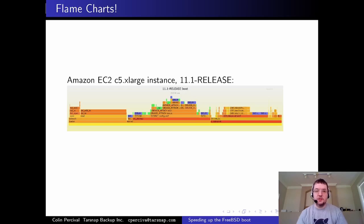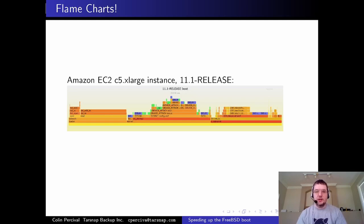This let me generate flame charts of the entire boot process — from loader entry to the end of etcrc. Here is 11.1 release. I backported the patches from FreeBSD 13 back to 11.1 just to generate this flame chart. The kernel boot section in the middle is recognizable, and represents a bit over a third of the entire boot process. Now we can see the whole picture.